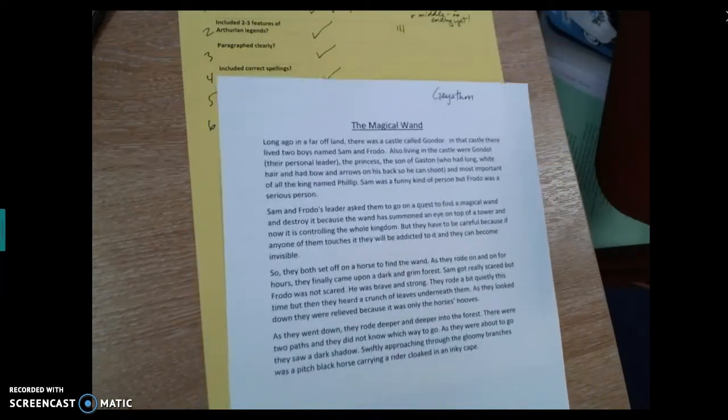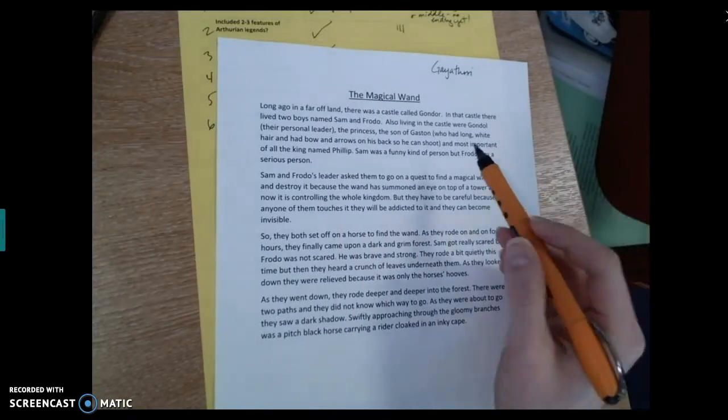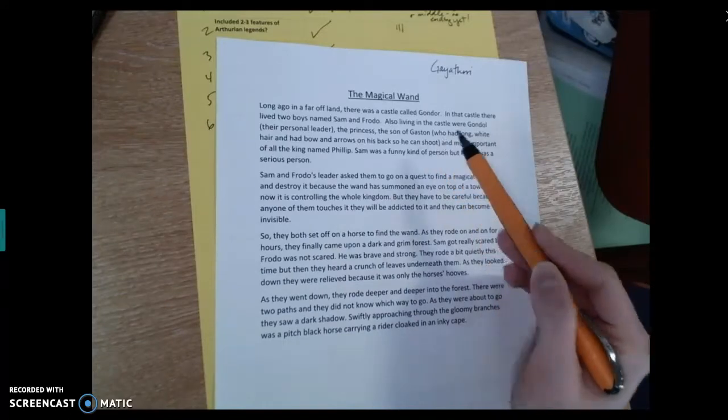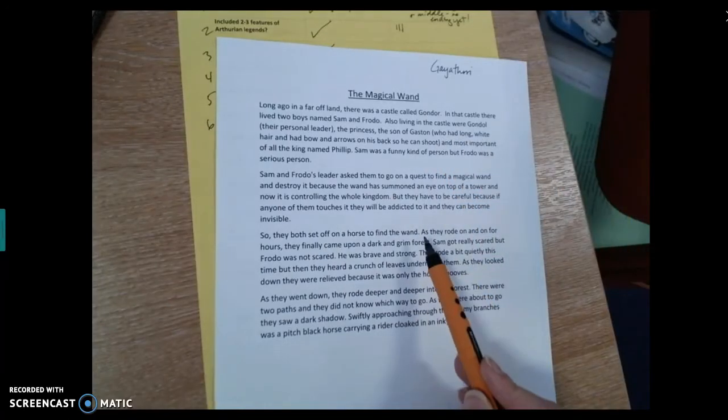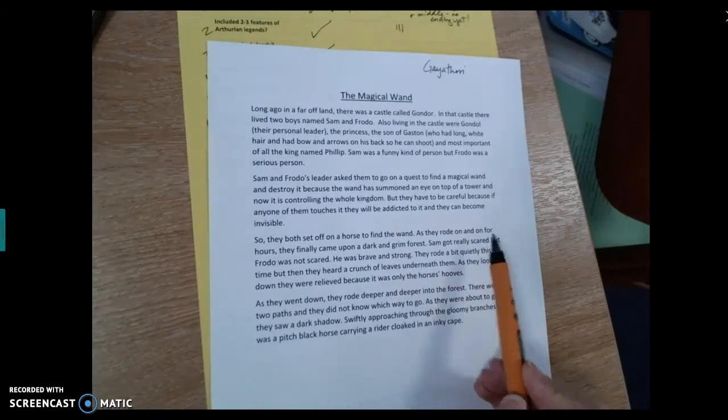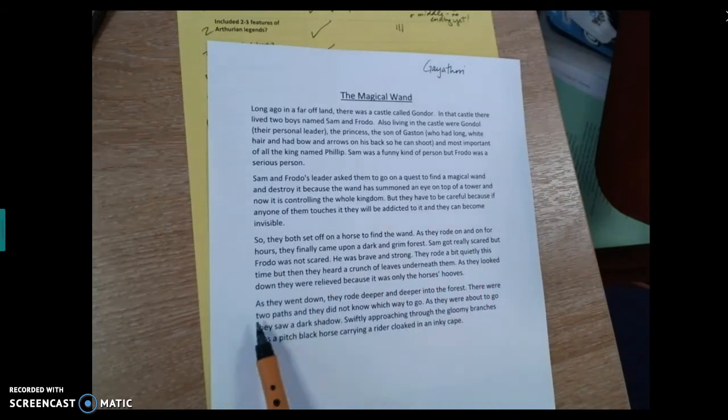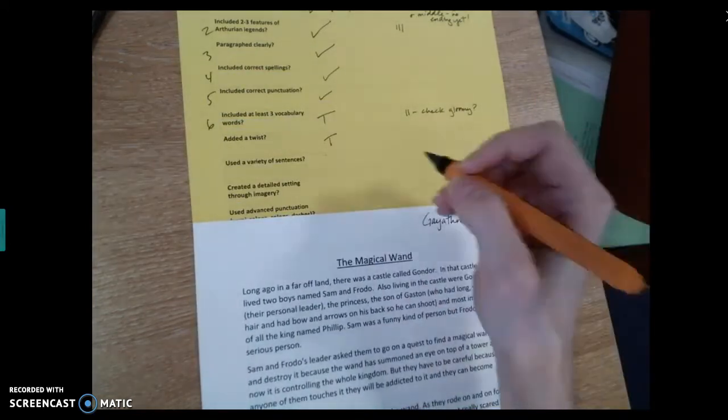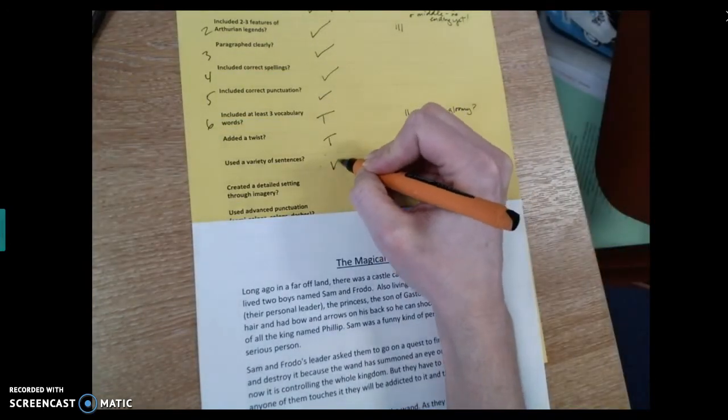Has she used a variety of sentences? I really like how Gayathri has used brackets here to put in additional information because that's a different kind of sentence type. She also has a really nice way of starting sentences with as. So as they wrote on and on for hours, comma, and she does it as they went down, comma, as I look down. So she does have a nice way of kind of varying how her sentences begin. So I think that's a good start. I'm going to give her a tick for that.